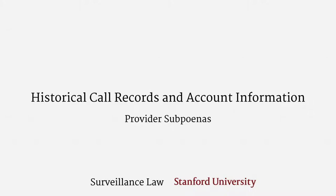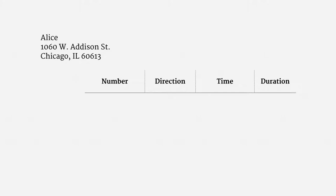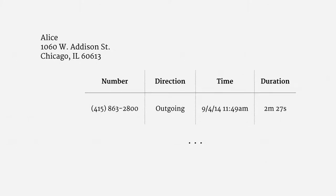In other words, roughly, what would appear on a person's telephone bill? It would include your name and address, as well as a list of numbers you connected to, whether the call was incoming or outgoing, the time the call started, and how long the call lasted. Here's a tiny example from my own call records — it's Chinese takeout lunch.